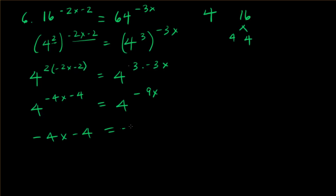Equals negative 9x. I'm going to add 9x to both sides, so we have 5x minus 4 equals 0.